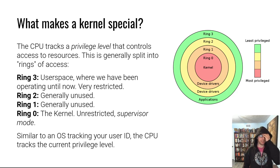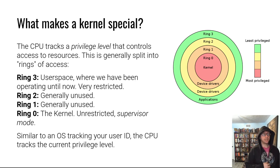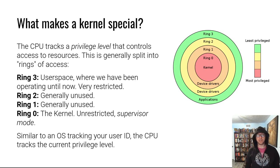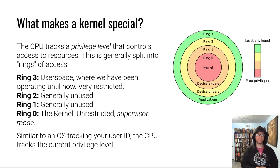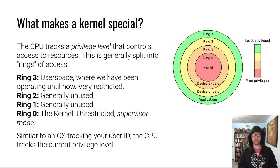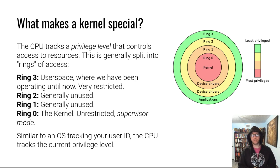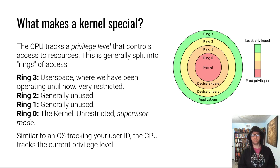When software running in ring 3 needs to interact with the system, it needs to talk to ring 0. Ring 2 and ring 1 were originally envisioned for device drivers of different access levels — for example, code that had access to the IN and OUT instructions but not to the CR3 register. Realistically, they're not used. We're not actually serious enough about security to utilize them, but they exist.